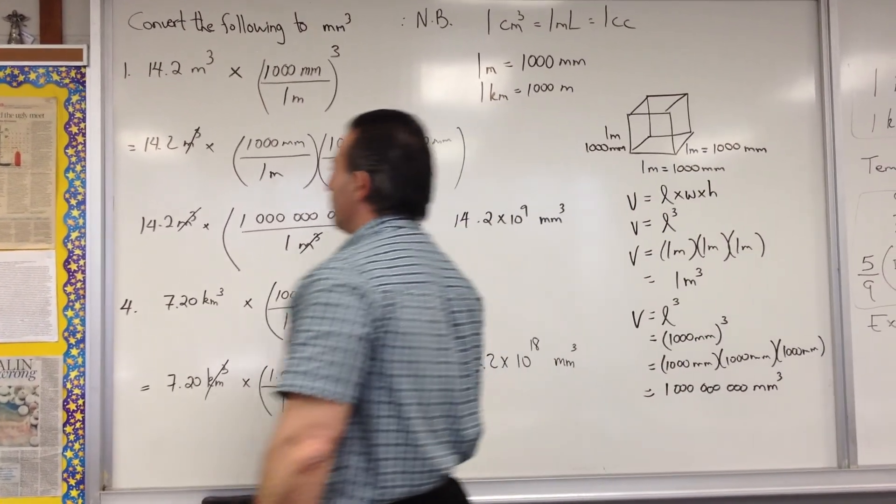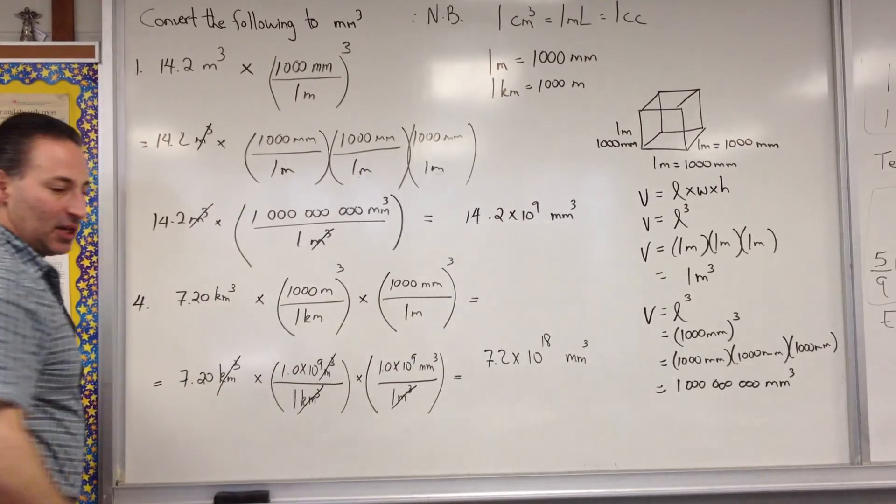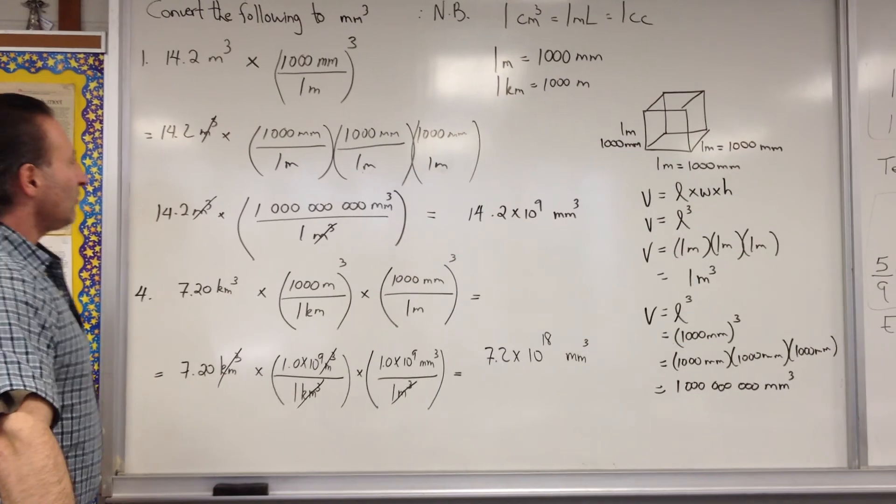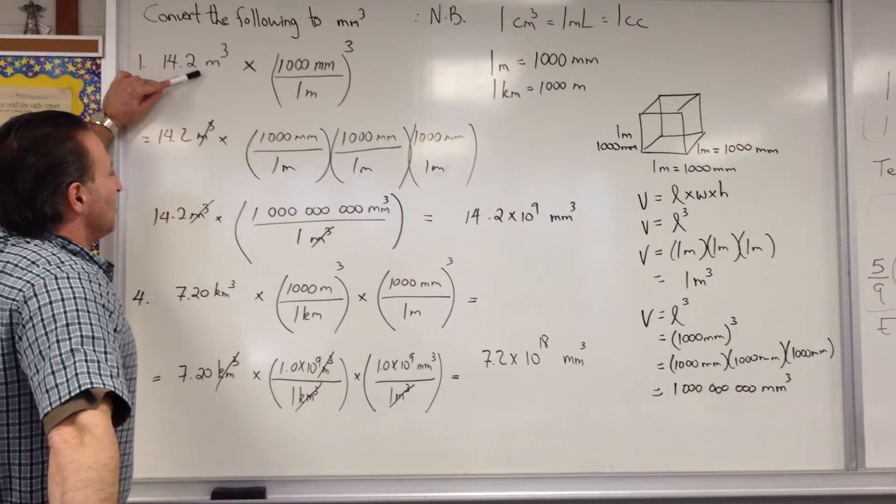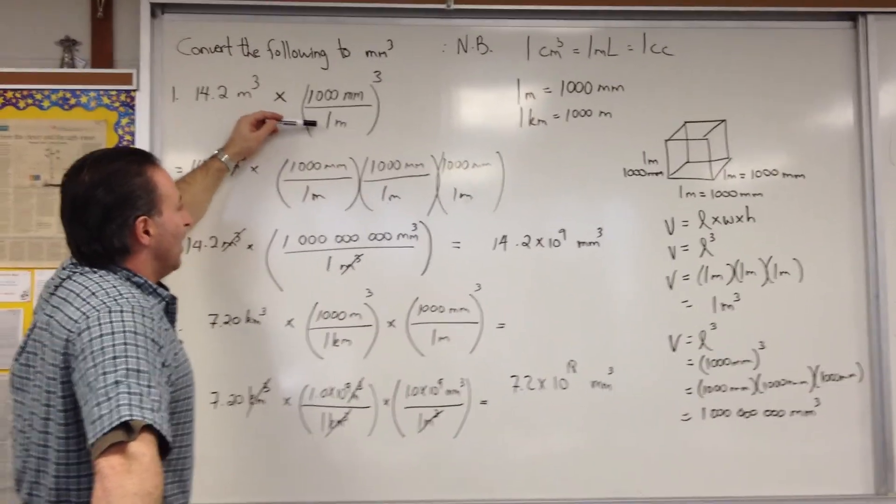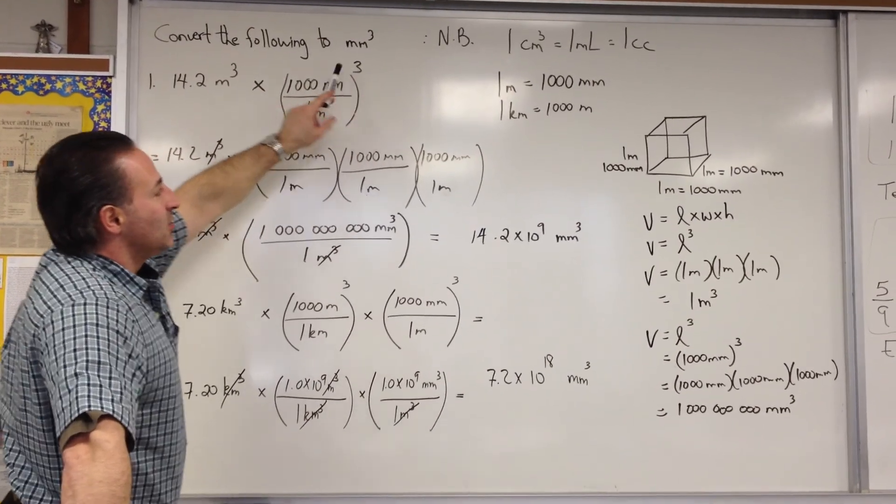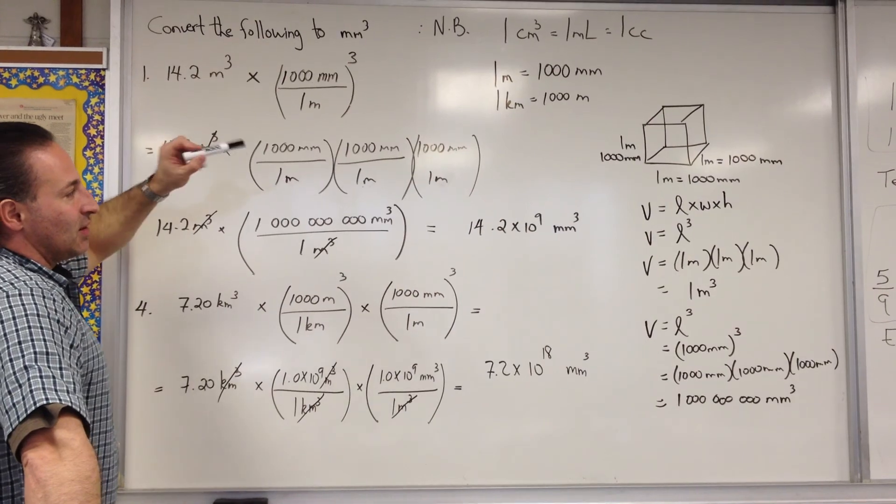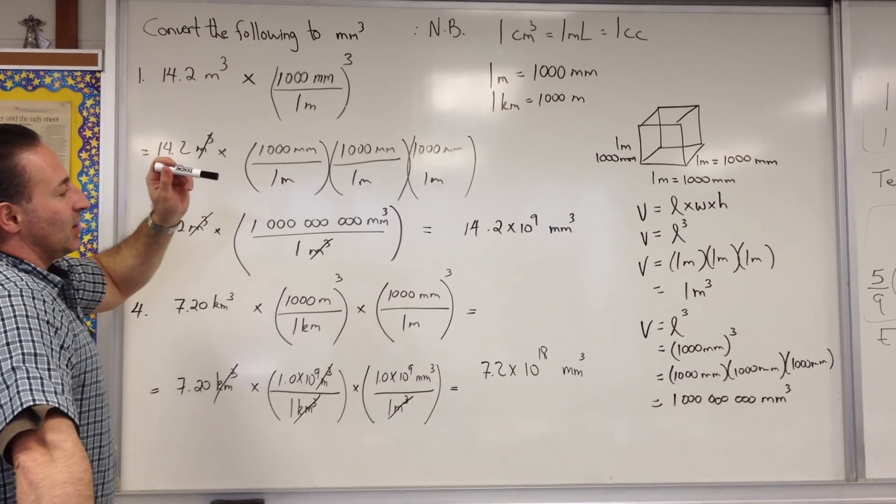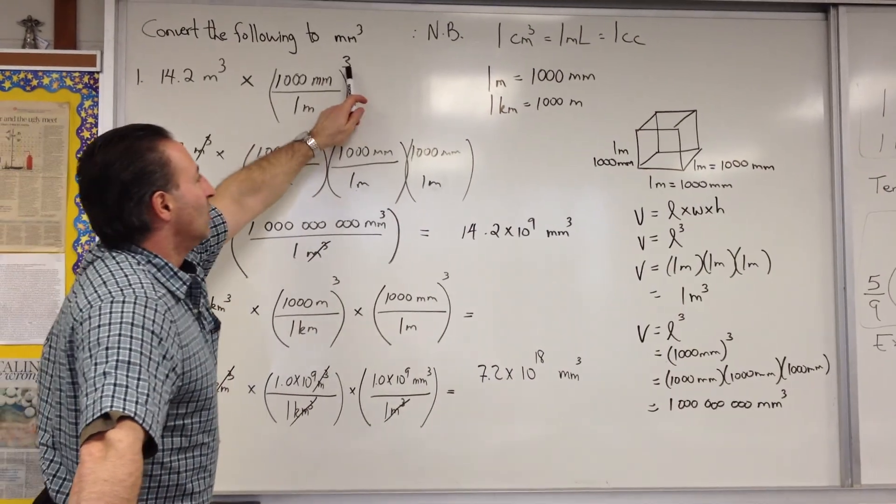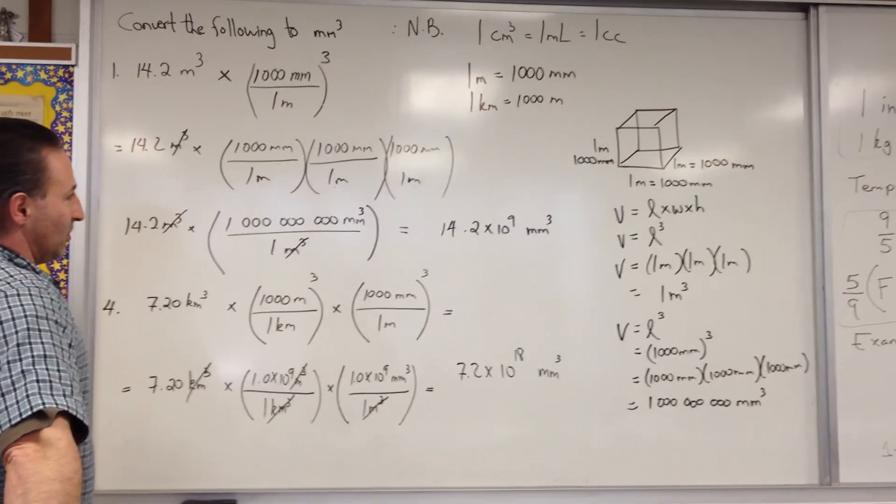So, we're asked to convert 14.2 meters cubed into millimeters cubed. Because it's a measurement of volume, we can use the linear conversion factor, but we have to raise it to a factor of 3. We have to raise it to the power of 3 because volume is measured as length, width, and height as three dimensions. So, that's why we also raise the conversion factor to three dimensions.